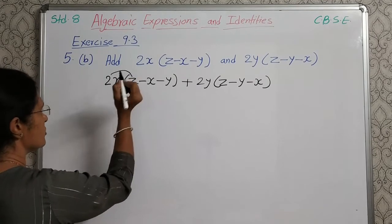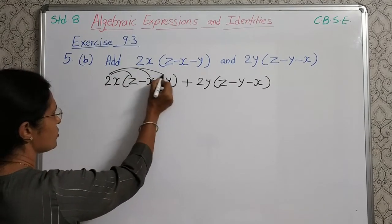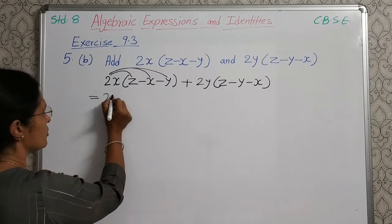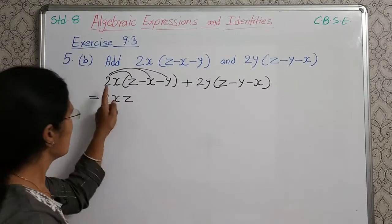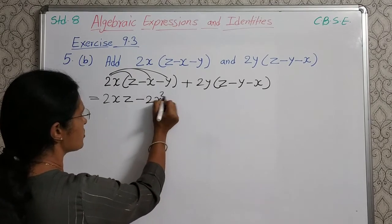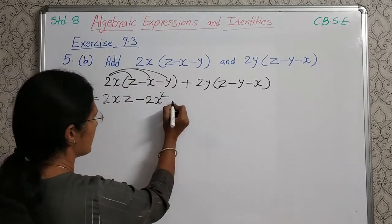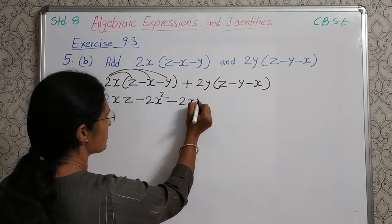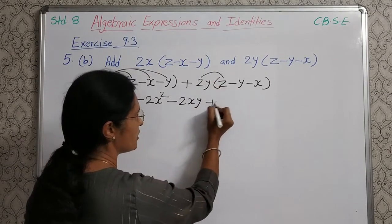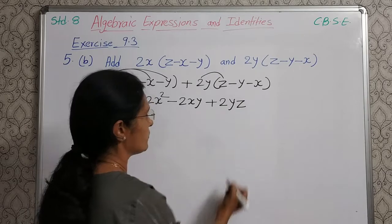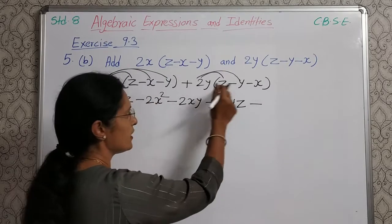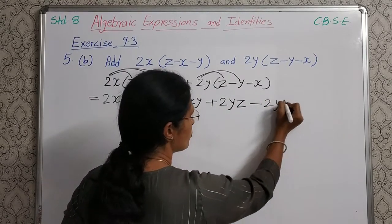So, 2X into Z is 2XZ. Next, 2X into minus X is minus 2X square. Now, 2X into minus Y is minus 2XY. After that, plus 2Y into Z is plus 2YZ. Next, plus 2Y into minus Y — plus minus — minus 2Y into Y is 2Y square.